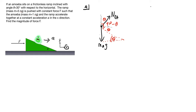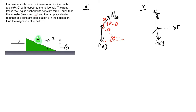Now we'll do the free body diagram for the ramp. The ramp has the force F being pushed on it in that direction, and the weight of the ramp coming down — that's the mass of the ramp times g. There's a normal force from the earth exerted on the ramp. And finally, there's the equal and opposite force: the normal force exerted by the amoeba on the ramp. Much like the example with two blocks, the magnitude of the normal force from the amoeba on the ramp equals the normal force of the ramp on the amoeba.